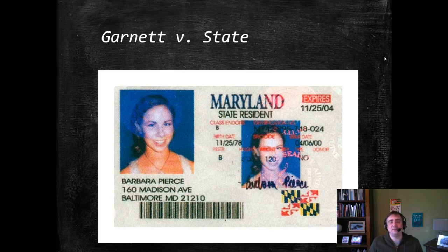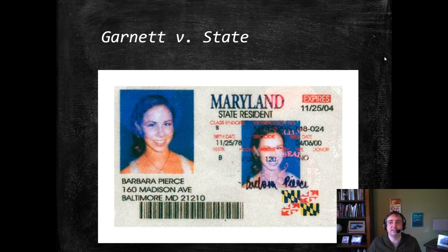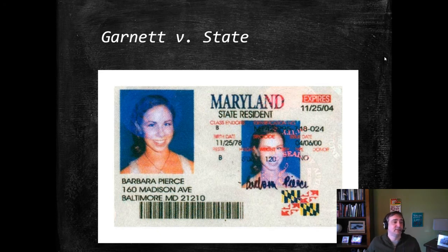So what happens to a defendant like Garnett? Garnett is biologically age 20, and he had sex with someone who was age 13. On those facts alone he's guilty — the age-of-consent requirement is met, the difference-in-age requirement is met, and there's strict liability. He committed the sex act; we know because she got pregnant and it can be traced back to him. He had the mens rea for the sex act element itself.